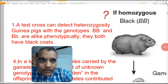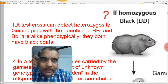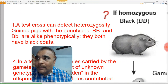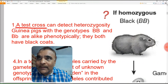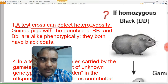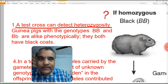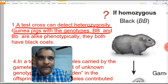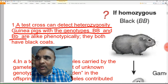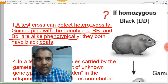This is the first point of our discussion: what is the use of test cross and how is it helpful to us? Test cross can detect heterozygosity. Guinea pigs with genotypes BB and Bb are alike phenotypically — they both have black coats.